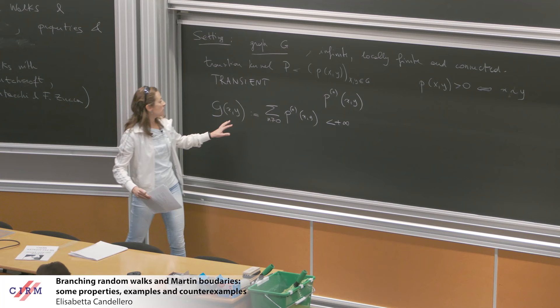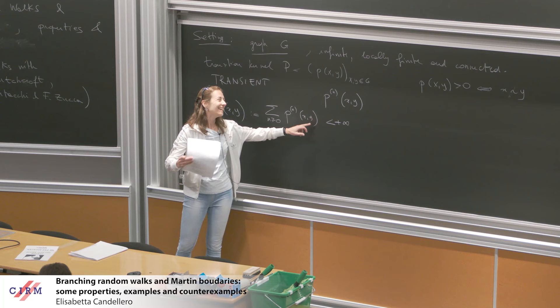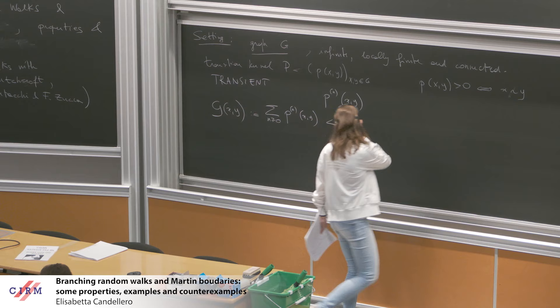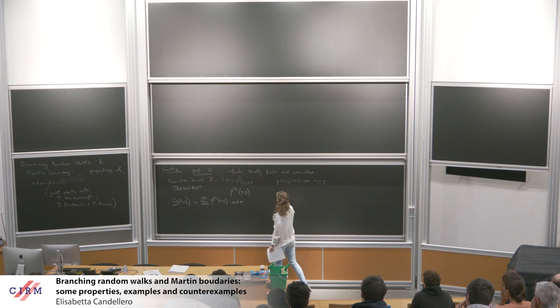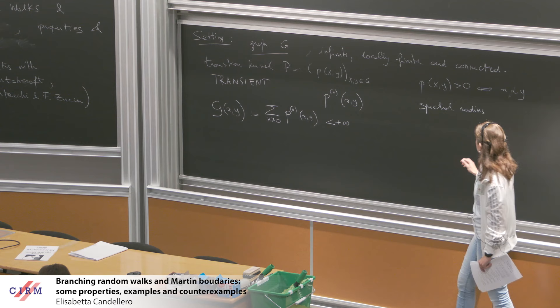I need this notation to define the Green function. For every x and y in the graph, I denote by G(x,y) the sum over all n ≥ 0 of P^n(x,y). Since I'm assuming the walk to be transient, this is going to be finite. We can interpret this function as the expected number of times that a random walk started at x visits y over its whole history.